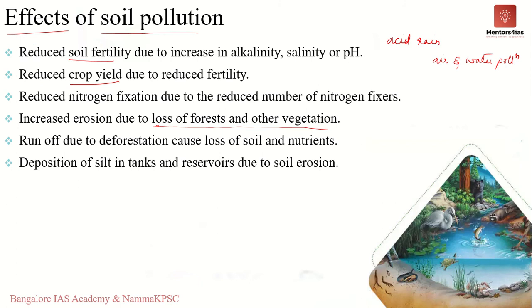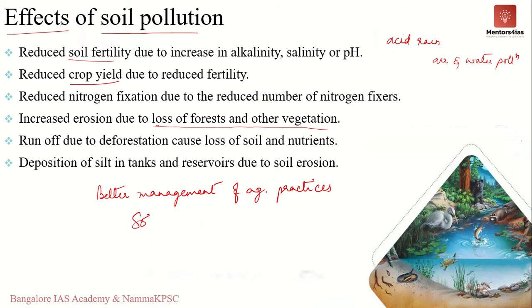Controlling soil pollution is achievable if the necessary steps are taken. Better management of agricultural practices — including educating farmers on proper use of pesticides, insecticides, and herbicides — can reduce soil pollution to a great extent. Improved waste disposal management also helps, and remedial measures such as bioremediation, phytoremediation, and micro-remediation are available options.